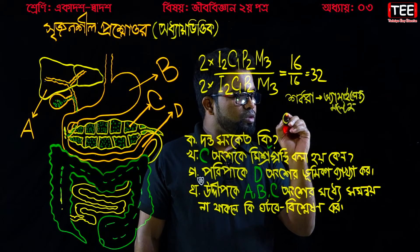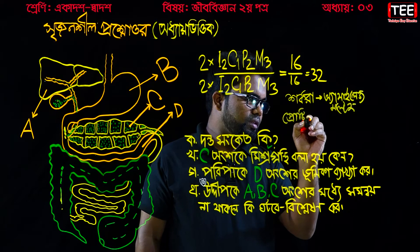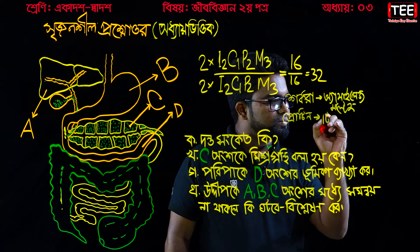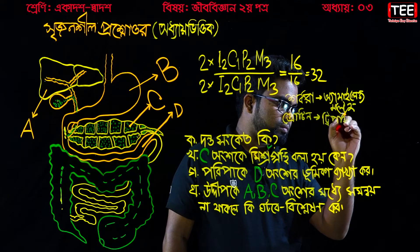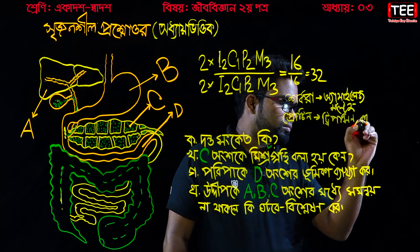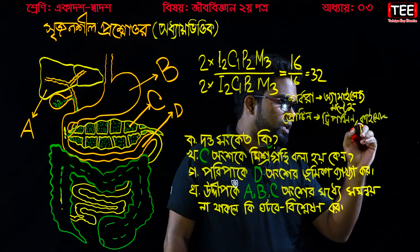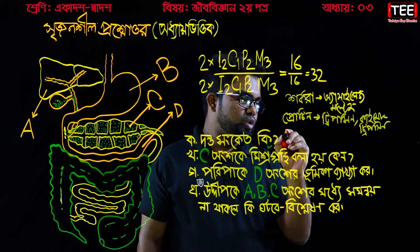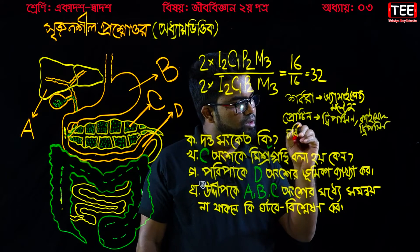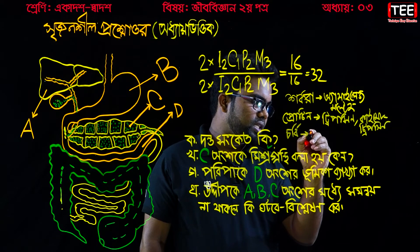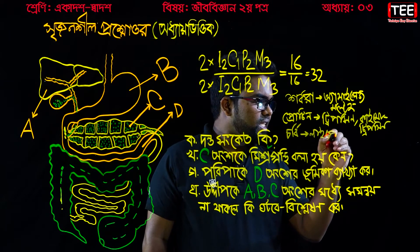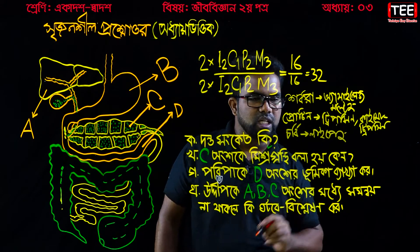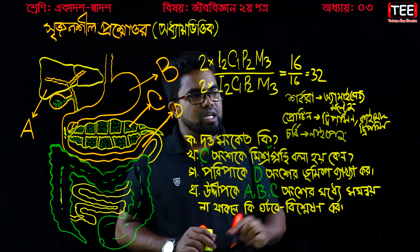Amylase enzyme acts on protein — protein enzyme. Trypsin. Chemotrypsin enzyme. Fat enzyme — lipase, pancreatic lipase. So we have amylase, trypsin, trypsin, lipase, lipase — these are the enzymes.